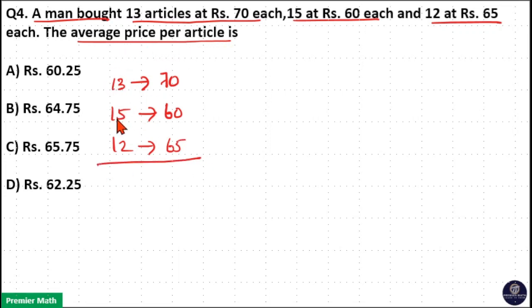So total articles are 13 plus 15 plus 12, that is 40. Now, if I take 65 as common average, then 60 can be written as 65 minus 5 and 70 can be written as 65 plus 5. Now, here 65 is common average for all these three.